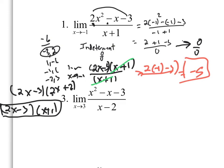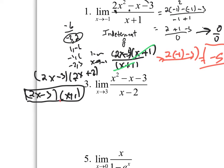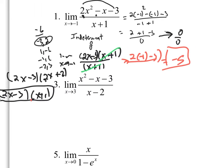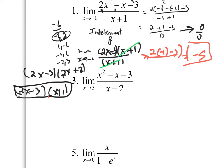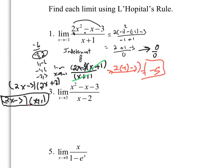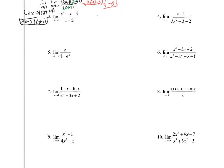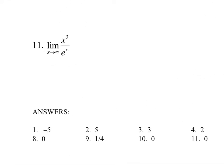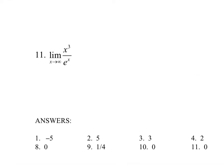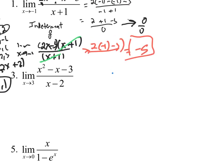The reason you're going to love L'Hôpital's Rule is because that took a lot of work. There are people in this room who might not have been able to factor this. Even if you tried every combination, you'd get it eventually. Let me show you what L'Hôpital's Rule is. The answers are at the bottom of the paper — negative 5 was the answer to number 1. We're right.